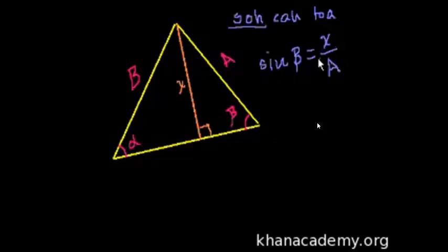And if we wanted to solve for X, and I'll just do that because it'll be convenient later, we can multiply both sides of this equation by A, and you get A sine of beta is equal to X. Fair enough. That got us someplace.